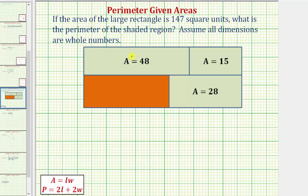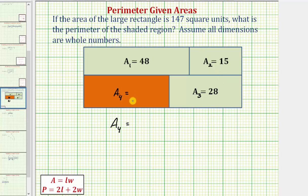To keep things organized, let's call these areas a sub one, a sub two, a sub three, and a sub four for the orange rectangle. Let's begin by determining the area of the orange rectangle. A sub four equals the area of the large rectangle, 147 square units, minus the areas of the three small rectangles: minus 48, minus 15, minus 28, which equals 56 square units.